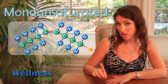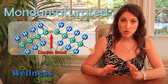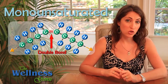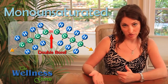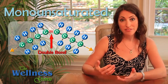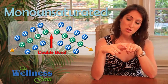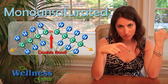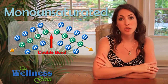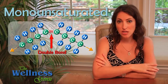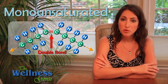Monounsaturated fats have one double bond — hence the name mono — between two carbons, and therefore lack two hydrogens. These are not saturated with hydrogen and therefore have a kink in their structure where that hydrogen is missing. These oils are liquid at room temperature but become solid in the fridge, and they are fairly stable fats. An example is olive oil.